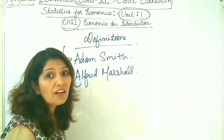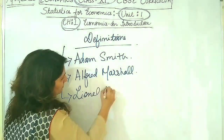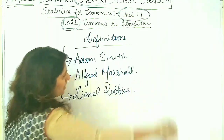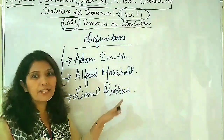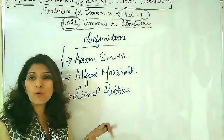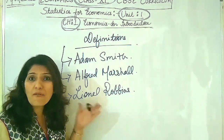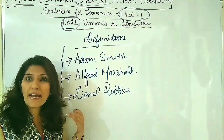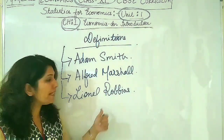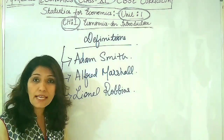After Alfred Marshall came Lionel Robinson. All three economists were European economists. Lionel Robinson was also from London and he studied from the London School of Economics. If you ever visit the London School of Economics, you will find a building named after him — Lionel Robinson's building. He gave the definition of economics in terms of scarcity.